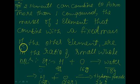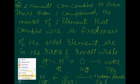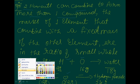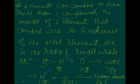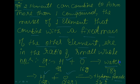If two elements can combine to form more than one compound — here the two elements are hydrogen and oxygen. They form different compounds: one is water and the other is hydrogen peroxide. So hydrogen and oxygen combine to form more than one compound.